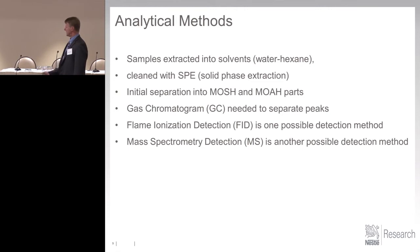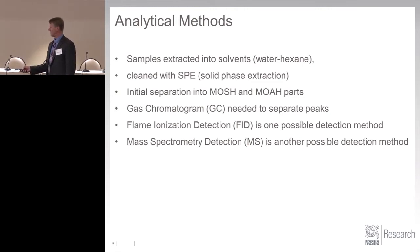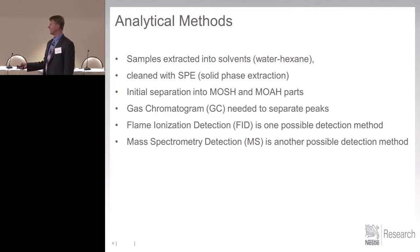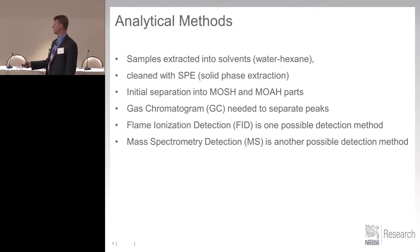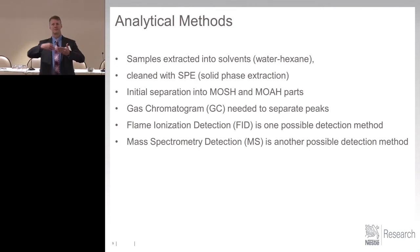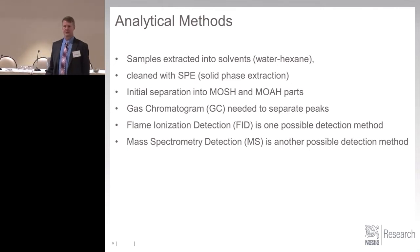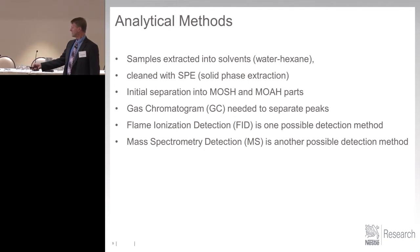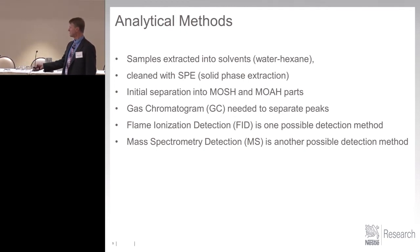Let's talk about analytical methods. A rough outline: samples are extracted, cleaned with SPE, and this gives an initial separation into MOSH and MOAH parts, so you will see two chromatograms — these are the different fractions out of the SPE. Gas chromatograms need to separate the peaks and identify them. FID and mass spec are possible detection methods.